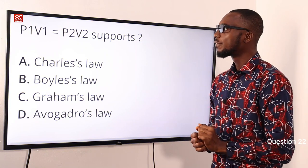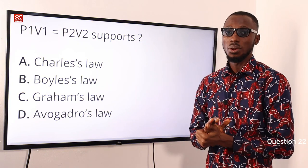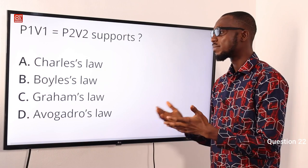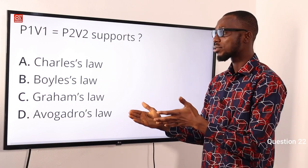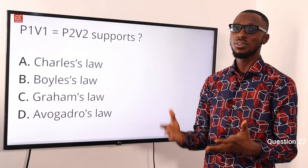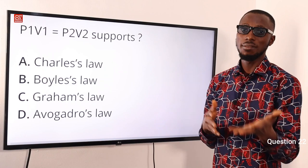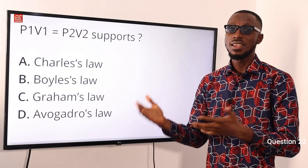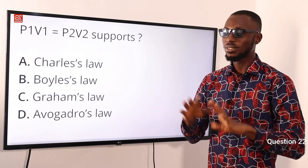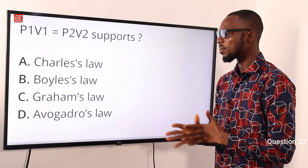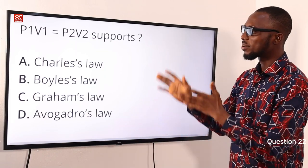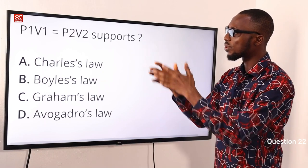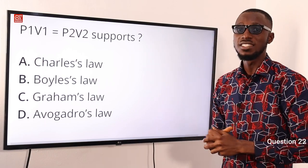Question 22: P1V1 = P2V2 supports what? That supports Boyle's Law. Remember, Boyle's Law talks about the volume of a fixed mass of gas being inversely proportional to pressure, provided temperature remains constant. Charles' Law talks about the effects of temperature on volume. Graham's Law of Diffusion deals with the rate of diffusion of a gas when temperature and pressure are kept constant. So the correct option here is option B, Boyle's Law.